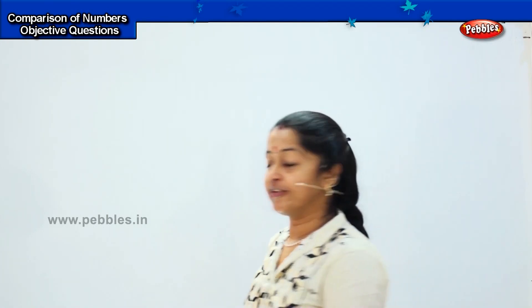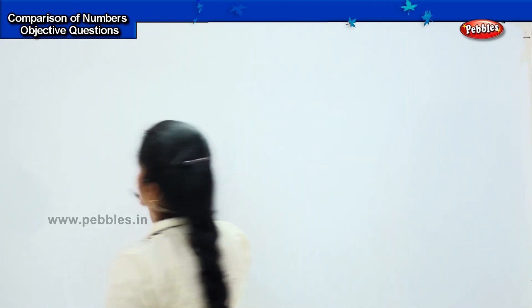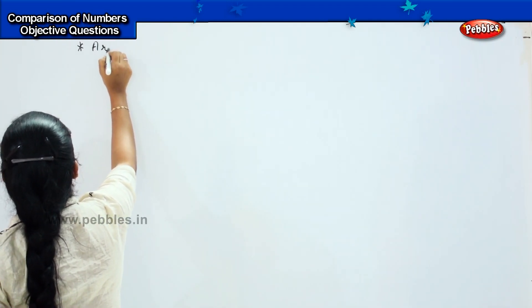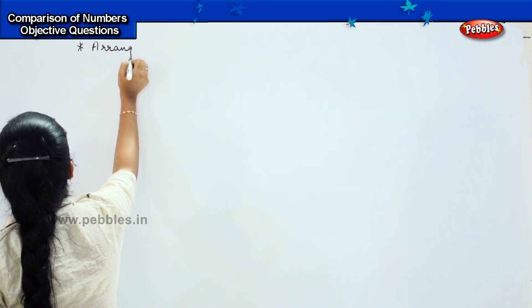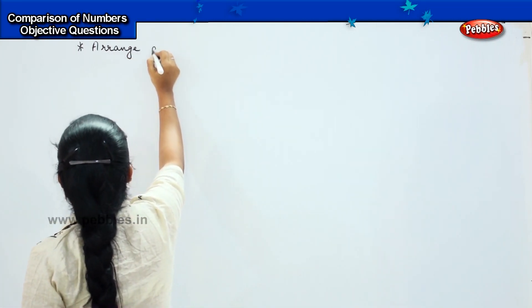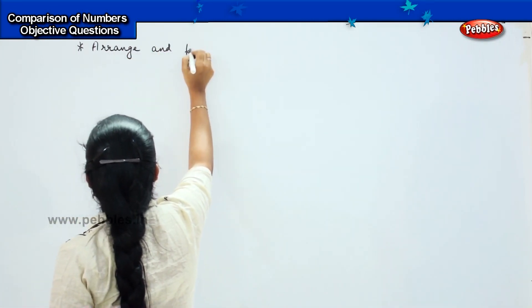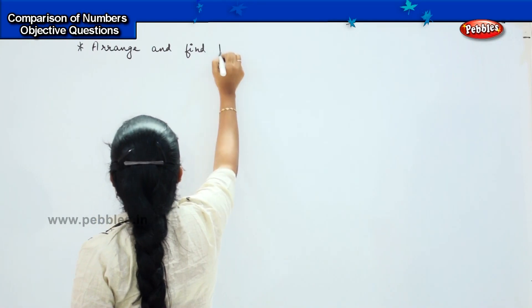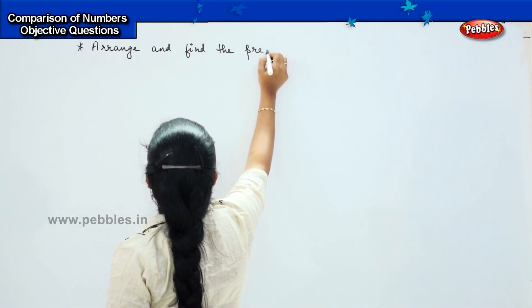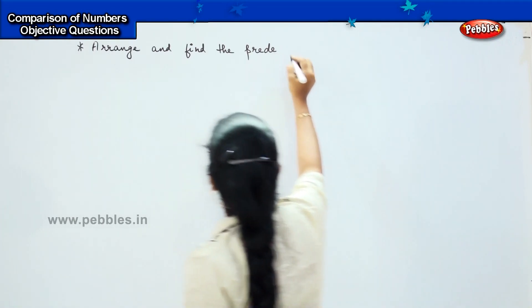Now, I have a few tricky questions for you children. Shall we solve? Here comes my first question. You have to arrange and find the predecessor of the given numbers. What do you mean by predecessor, children? Have you heard it before?